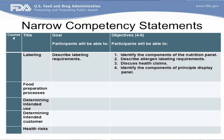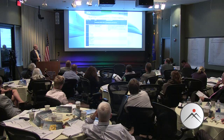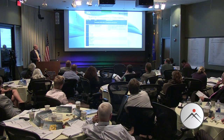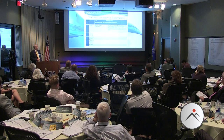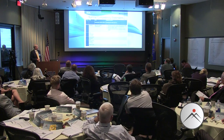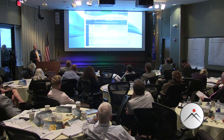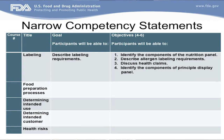For the narrow competencies, we look at sub-areas such as labeling, food preparation processes, and intended use. For the sub-competency 'labeling,' the goal is 'describe labeling requirements' — achieved by: identify the components on the nutrition panel, describe allergen labeling requirements, discuss health claims, identify the components of the principal display panel. We do the same for food preparation processes, determining intended use, intended customer, and health risks: what do we want them to do and how will they do it? That's how we keep narrowing it down.